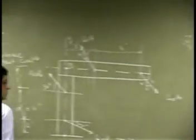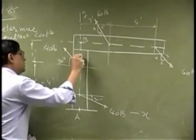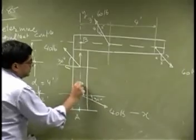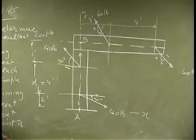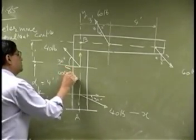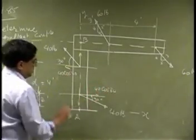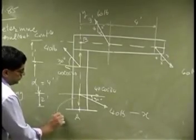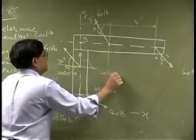To find the moment of this couple, we work with components. There is a component going this way and a component going this way. This gives us 40 cosine 30 and 40 cosine 30 for the horizontal components, and 40 sine 30 and 40 sine 30 for the vertical components.